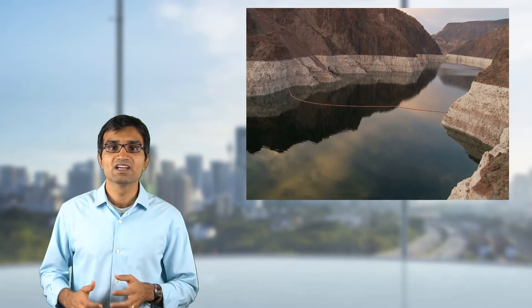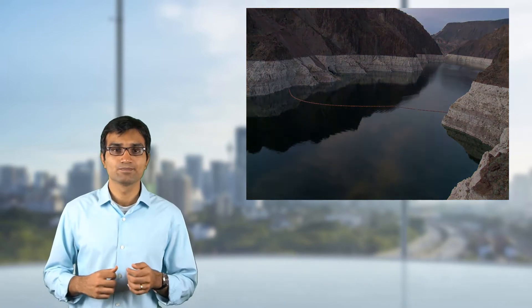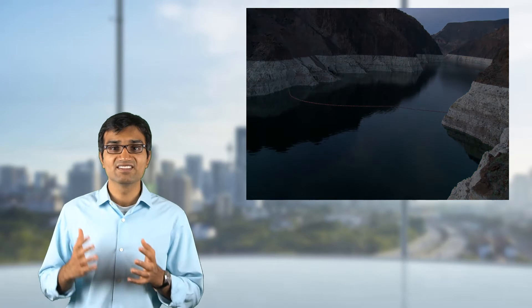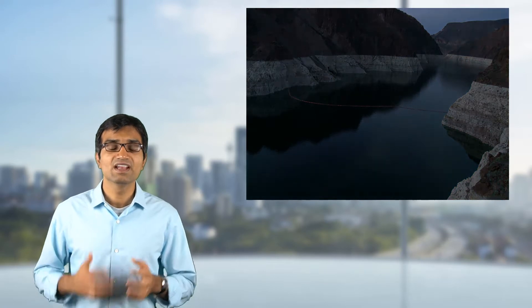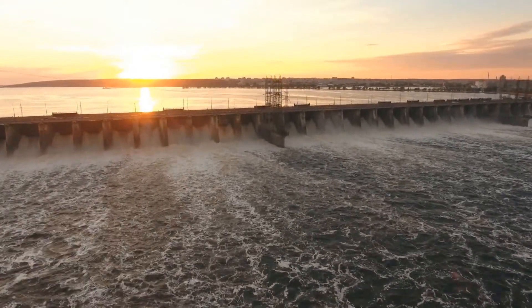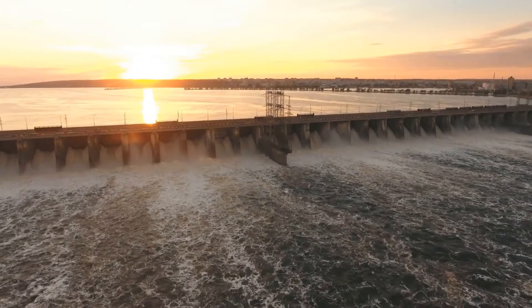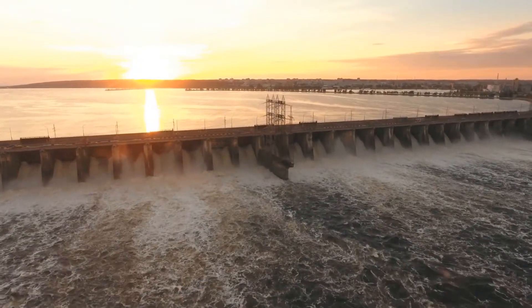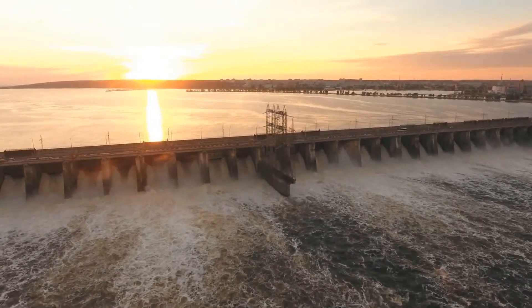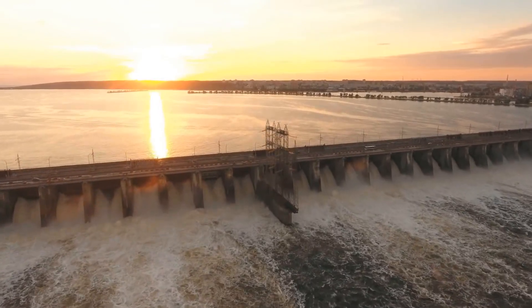Large volumes of water can be stored in dams and reservoirs. When this water is stationary, it is an example of fluid statics. This stored water is released for generating electricity. When the dam gates open, water starts to flow downstream. This is an excellent example of fluid dynamics.